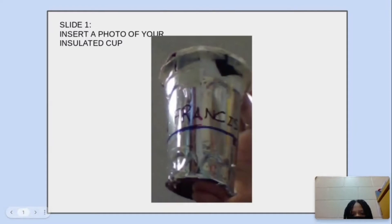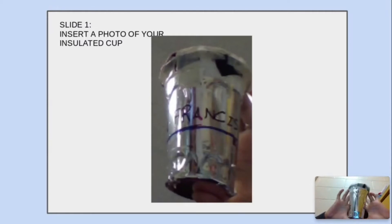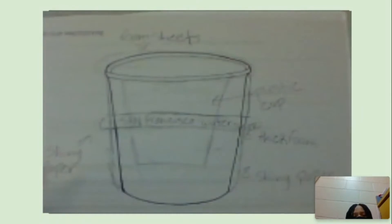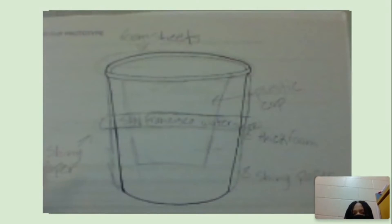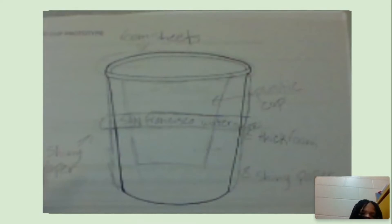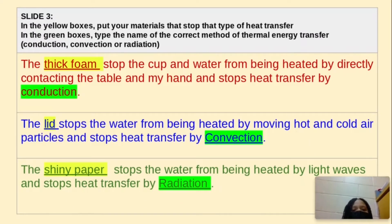So, this is my cup. This is how it looks. Here's a full 360 of the cup. This is the drawing of my cup. As you can see, I have the plastic cup, my foam sheets, my label, my thick foam, the shiny paper, and the plastic cup. The thick foam helps stop the cup and water from being heated by directly contacting the table and my hand, stopping heat transfer by conduction.